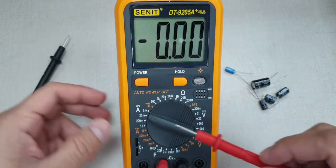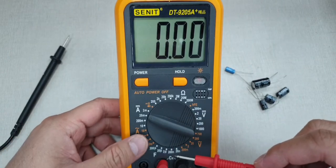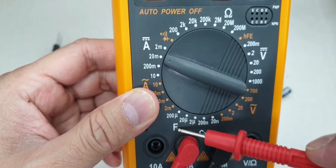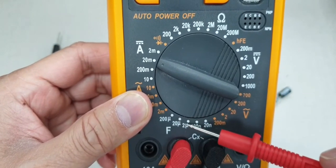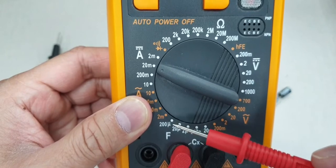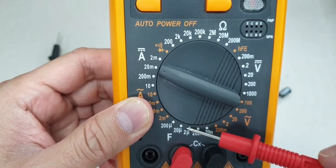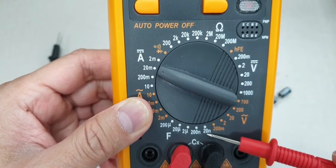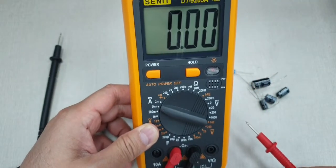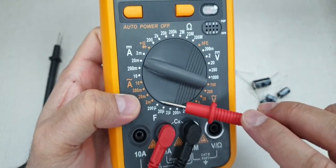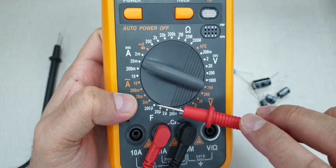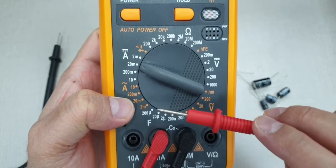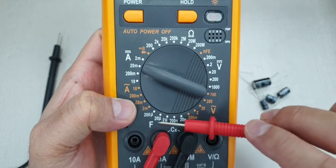Now you look at this portion here, there are symbols and it says F stands for farad. You have 200 microfarad here, 20 microfarad, 2 microfarad, 200 nanofarad and 20 nanofarad. My maximum microfarad is only 200, so anything beyond that I won't be able to test using this portion here.